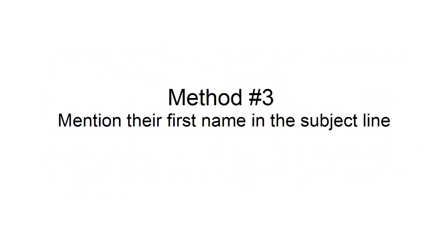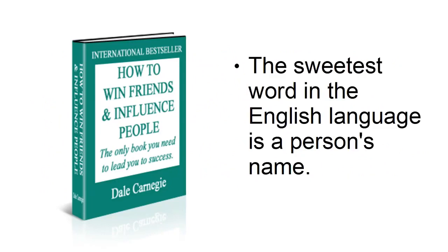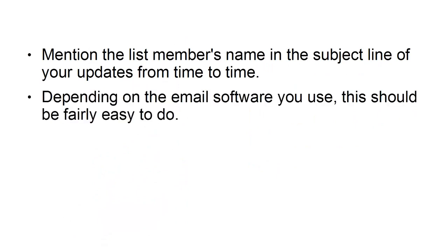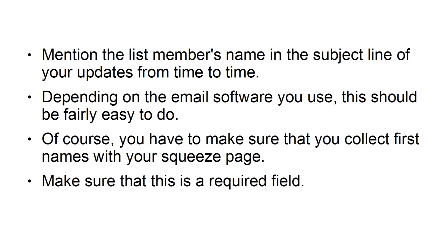Method 3: Mention their first name in the subject line. Dale Carnegie, the genius who wrote How to Win Friends and Influence People, said that the sweetest word in the English language is a person's name. Mention the list member's name in the subject line of your updates from time to time. Depending on the email software you use, this should be fairly easy to do. Of course, you have to make sure you collect the first names with your squeeze page and make sure that this is a required field.